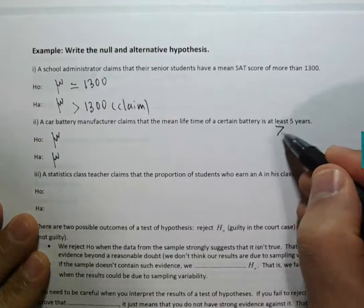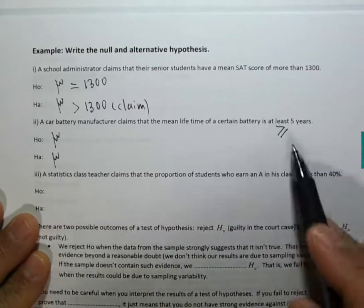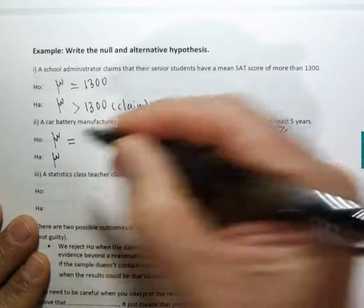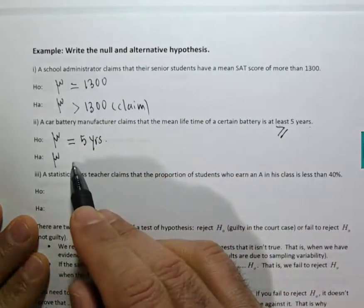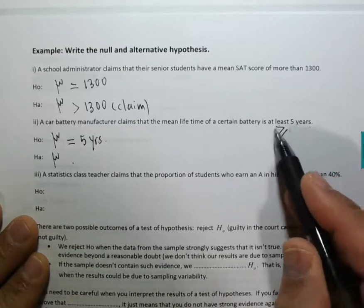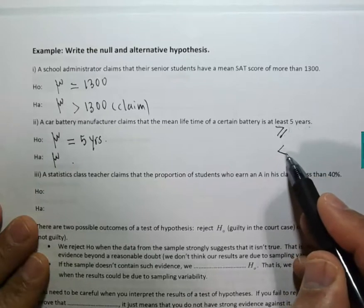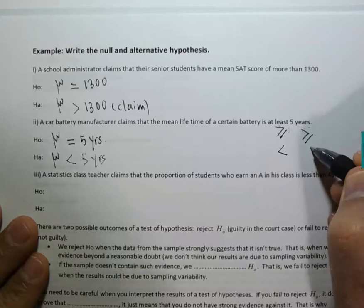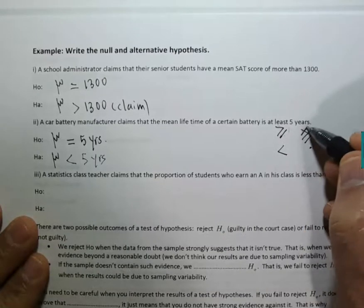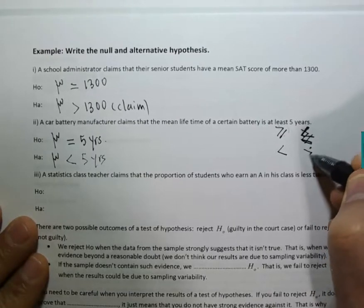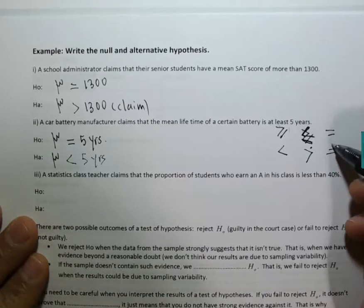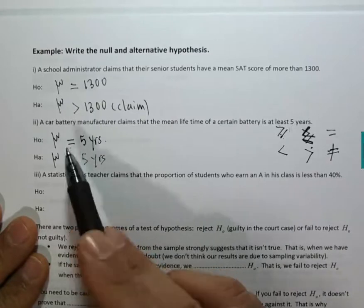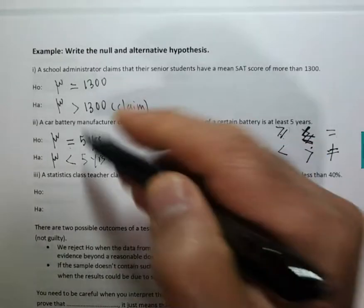'At least' means greater than or equal to. Since it contains the equal sign, you replace it with just an equal sign in the null: H₀: μ = 5. The alternative is the complement — the complement of 'greater than or equal to' is 'less than,' so H₁: μ < 5. Similarly, the complement of 'less than or equal to' is 'greater than,' and the complement of 'equal to' is 'not equal to.' In all cases, replace the null with just an equal sign. Third example: a statistics teacher claims the proportion of students who earn an A is less than 40% — 'less than' goes in H₁: p < 0.40, and H₀: p = 0.40.